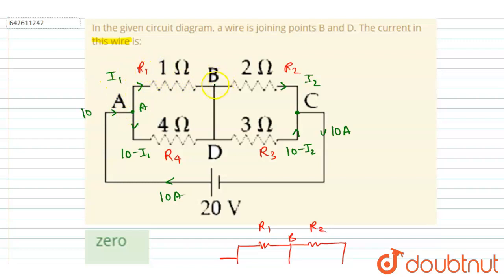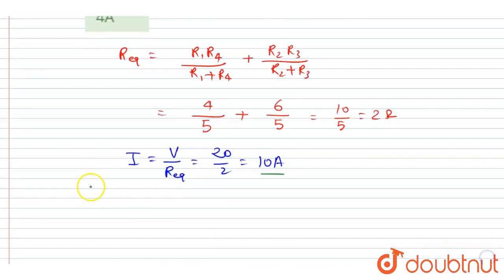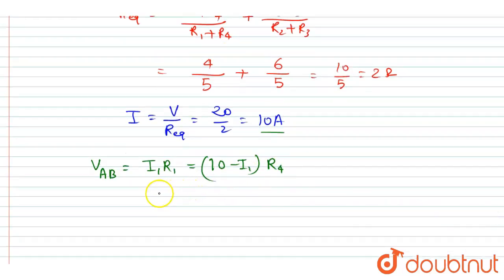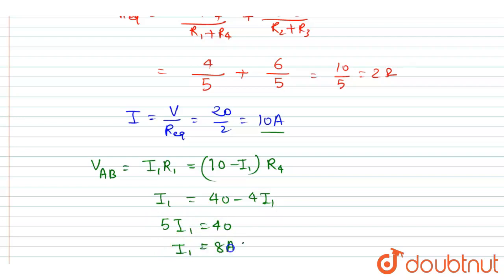The potential drop between A and B can be calculated as I1·R1, which also equals the potential drop across R4, that is (10 − I1)·R4. Substituting R1 = 1 and R4 = 4: I1·1 = (10 − I1)·4, giving I1 = 40 − 4·I1, so 5·I1 = 40, therefore I1 = 8 ampere.